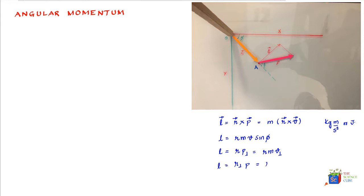which equals R perpendicular M into V. Now, what you should remember here is that R perpendicular is the perpendicular distance between O and the extension of vector P in the reverse direction.